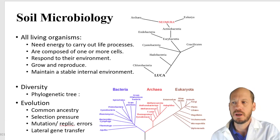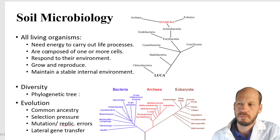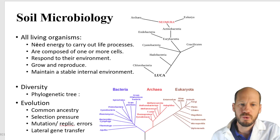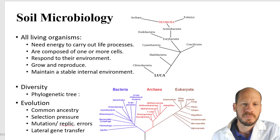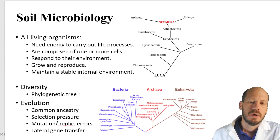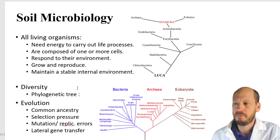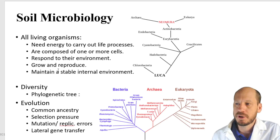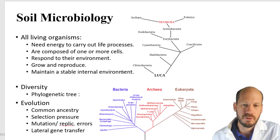What are living organisms? How do we define what is a living organism or not? Because biology and microbiology is the study of living organisms. The definition of living organisms goes through five criteria: they need energy to carry out their life processes; they are composed of one or more cells; they respond to the environment; they grow and reproduce; and they are able to maintain a stable internal environment. If any organism does not fulfill one of these criteria — for example, viruses cannot sustain an internal environment, and although they can grow and reproduce, they need the machinery of other living beings to do this — then they are not considered living organisms. Some criteria are not filled by viruses or prions.